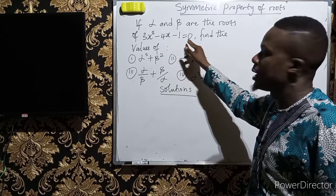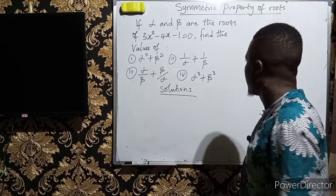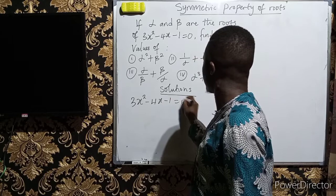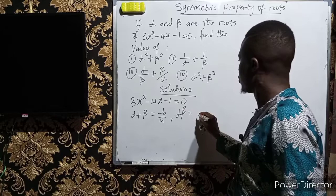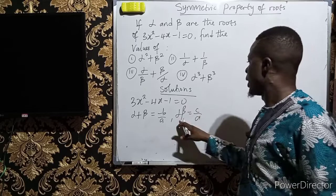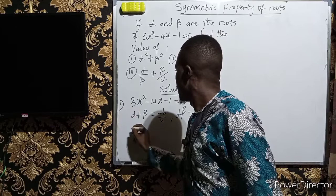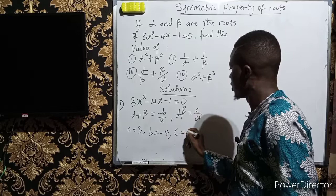We have that if alpha and beta are the roots of 3x squared minus 4x minus 1 equals 0, find the values of: alpha squared plus beta squared; 1 over alpha plus 1 over beta; alpha over beta plus beta over alpha; and alpha cubed plus beta cubed. The equation we have is 3x squared minus 4x minus 1 equals 0. From this equation, a is 3 (the coefficient of x squared), b is minus 4 (the coefficient of x), and c is negative 1 (the constant).